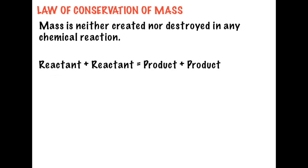In balancing chemical equations, you need to remember the law of conservation of mass. This law states that mass is neither created nor destroyed in any chemical reaction. Therefore, balancing equations requires the same number of atoms on both sides of a chemical reaction. The number of atoms on the reactants must equal the number of atoms in the products, and an equation must be balanced.